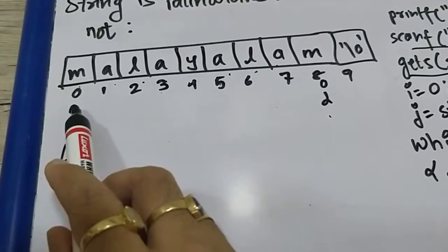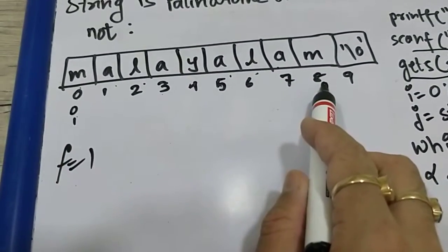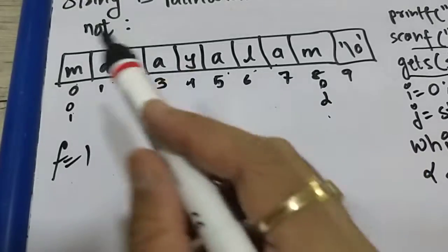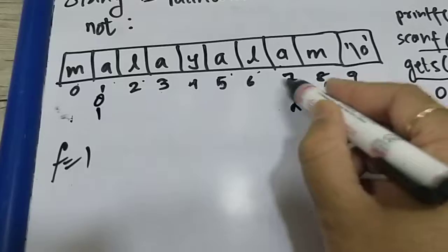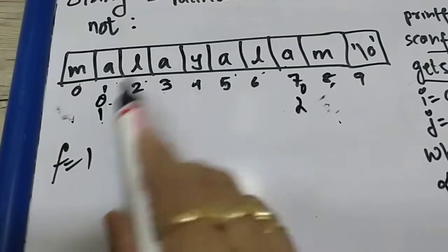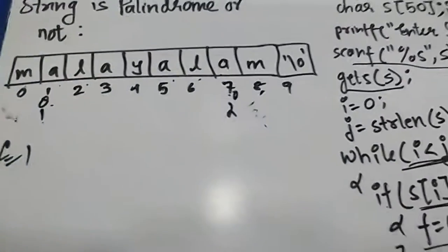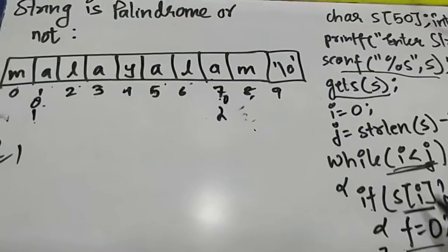Here my f is set to one, i is zero, j is length minus one. S of i not equal to s of j? False. So f zero nahi hoga, break nahi hoga. i will become one, j will become seven. i less than j, one less than seven, while loop i less than j, yes.